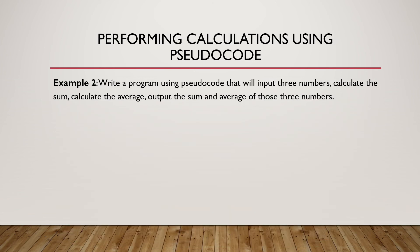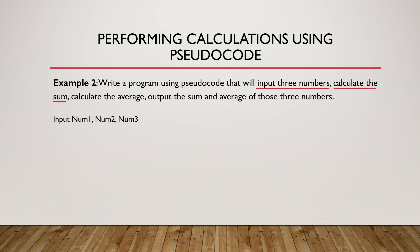We are going to look at another example: performing a calculation using pseudo-code. Write a program using pseudo-code that will input three numbers, calculate the sum, calculate the average, and output the sum and average of those three numbers. It's broken down into five parts: firstly input three numbers, secondly calculate the sum, thirdly calculate the average, fourth output the sum, and lastly output the average. We start by inputting the three numbers: input num1, num2, num3. To calculate the sum, we add three numbers this time: sum, arrow symbol, num1 plus num2 plus num3.